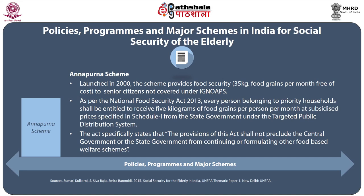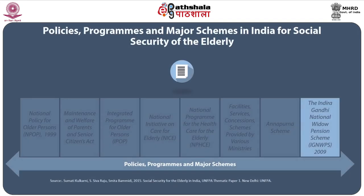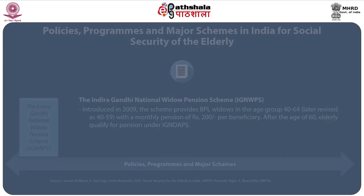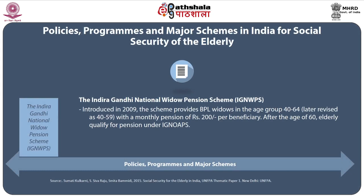As per the National Food Security Act of 2013, every person belonging to priority households shall be entitled to receive 5 kilograms of food grains per person per month at subsidized prices under the targeted public distribution system. The Act specifically states that its provisions shall not preclude the Central or State Government from continuing or formulating other food-based welfare schemes. There is also the Indira Gandhi National Widow Pension Scheme, introduced in 2009, which provides below-poverty-line widows aged 40 to 59 years with a monthly pension of Rs. 200. After they attain the age of 60, they qualify for the Indira Gandhi National Old Age Pension Scheme.